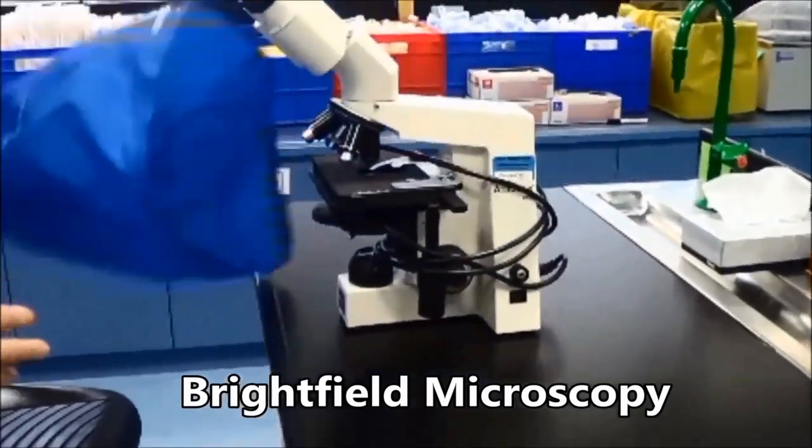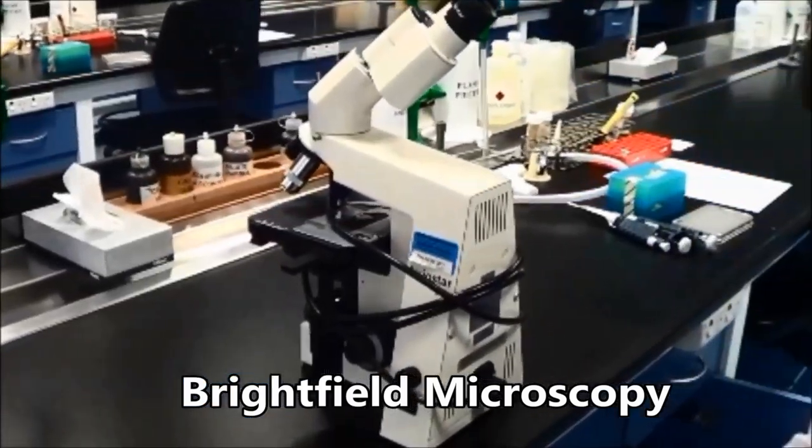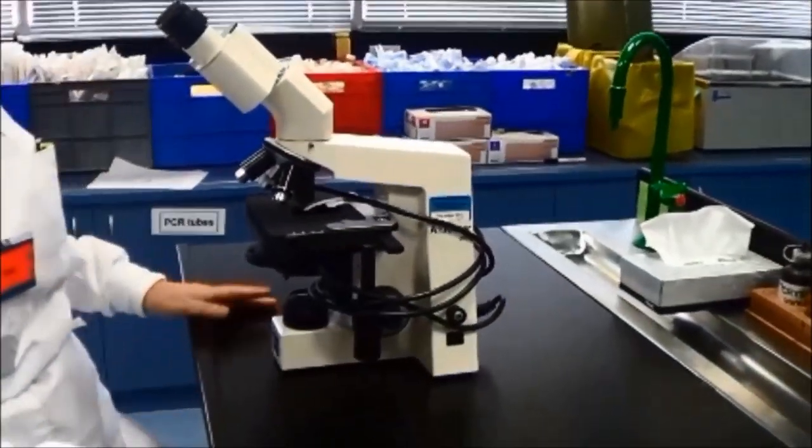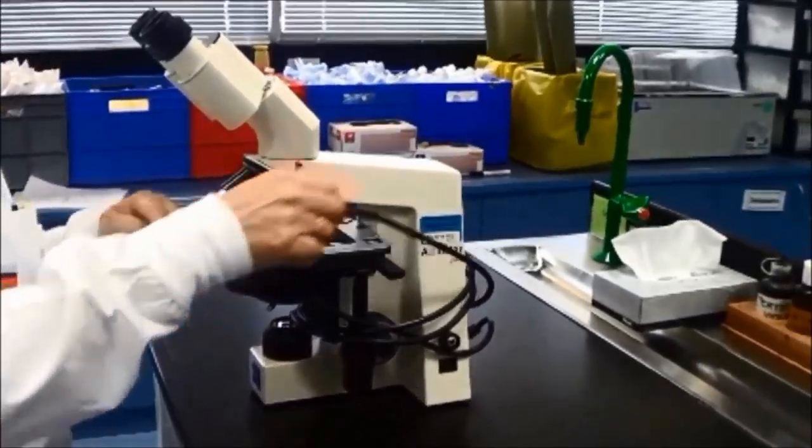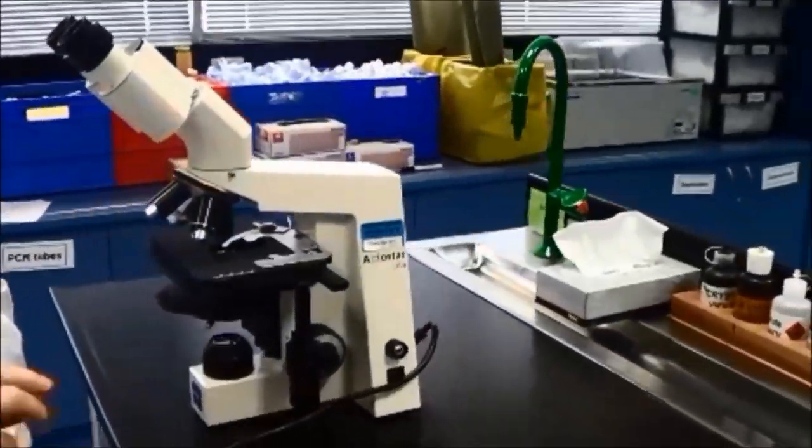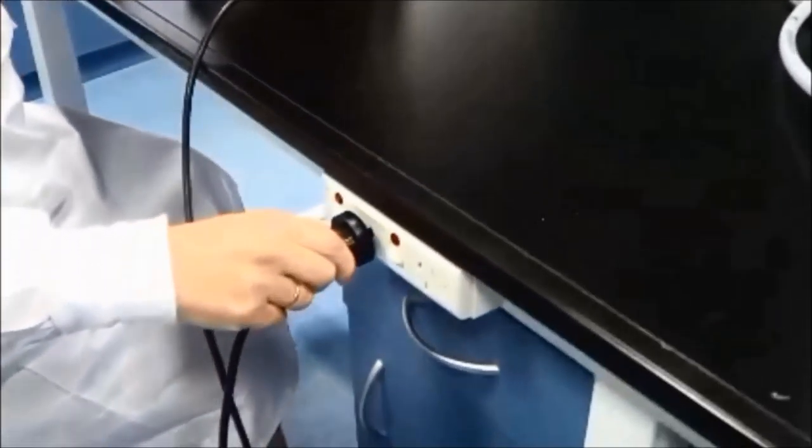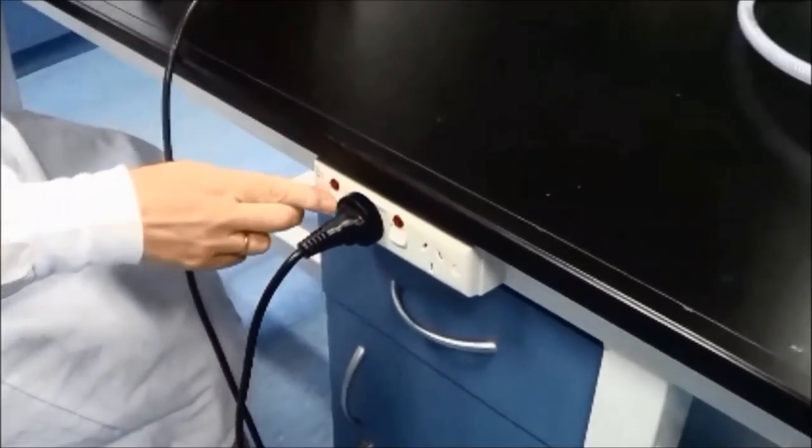Carefully remove the microscope from the cupboard and place gently on the bench with the eyepieces pointed towards you. Remove the dust cover and replace it in the cupboard. Turn the microscope on and adjust the brightness to an appropriate level.